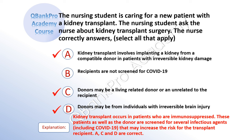The correct answer is A: Kidney transplant involves implanting a kidney from a compatible donor in patients with irreversible kidney damage. C: Donors may be a living-related donor or unrelated to the recipient. And D: Donors may be individuals with irreversible brain damage. Kidney transplant occurs in patients who are immunosuppressed. The transplant patient, as well as the donor, is screened for a number of infections that may increase the risk for the transplant recipient, including COVID-19. A, C, and D are correct.